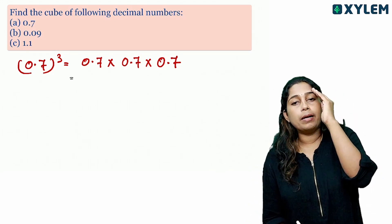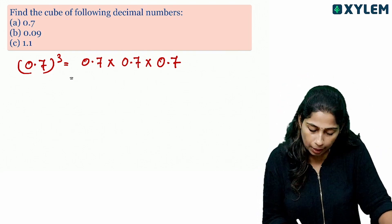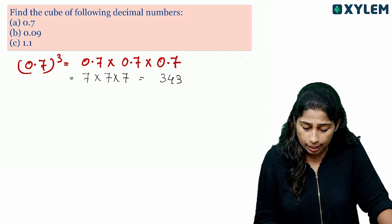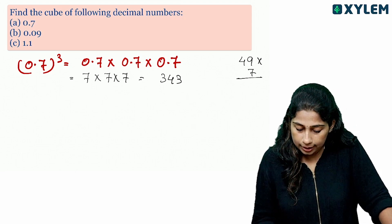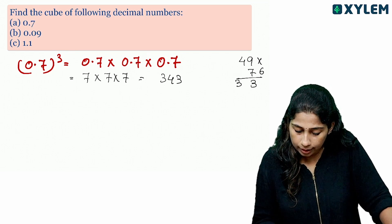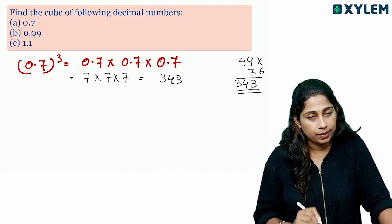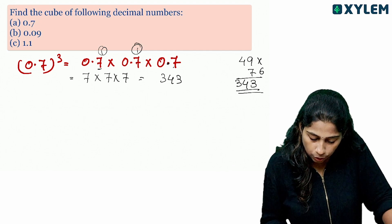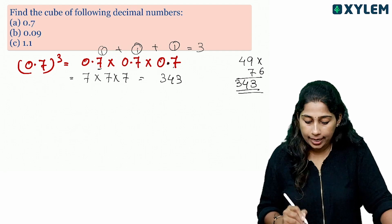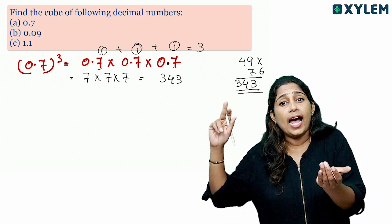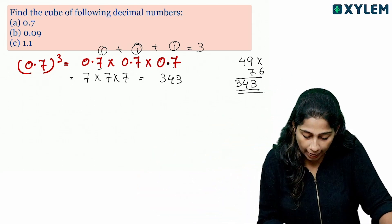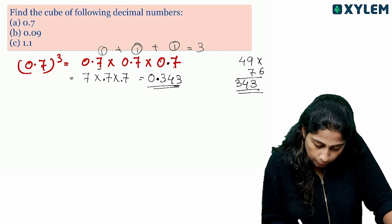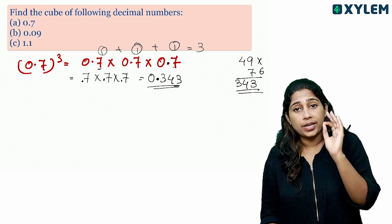Now for the cube of 0.7, we multiply 7 into 7 into 7 ignoring the decimal. 7 into 7 is 49, and 49 into 7: 28 plus 6 is 34, so we get 343. Now for the decimal: each 0.7 has 1 decimal digit, and there are 3 of them, so total is 3 decimal digits. Our answer is 0.343.